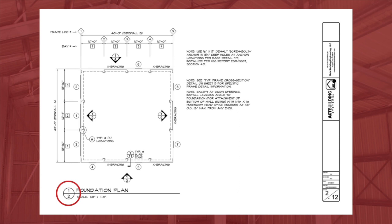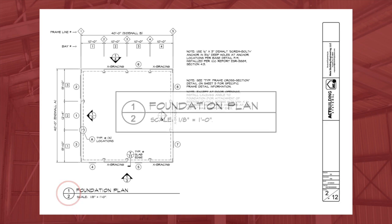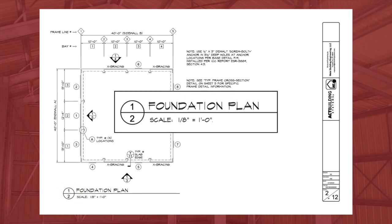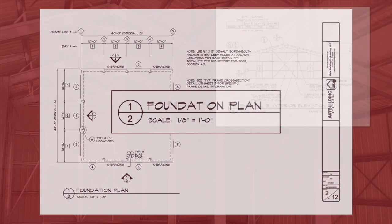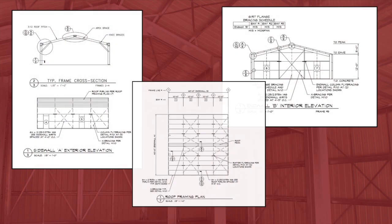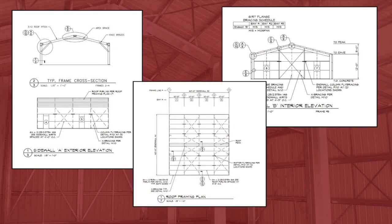You will typically find the first detail is the foundation plan, and on our example, the plan is labeled drawing 1 on page 2. Additional drawings will show you side wall and end wall elevations, and a roof detail. You will also see a mezzanine plan if your building has a mezzanine.